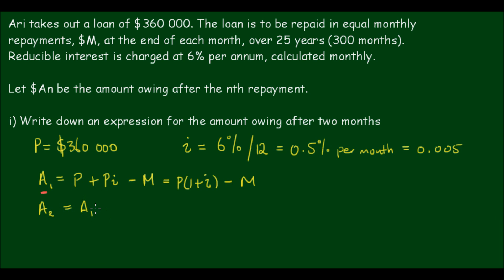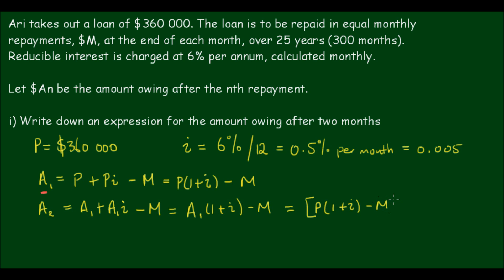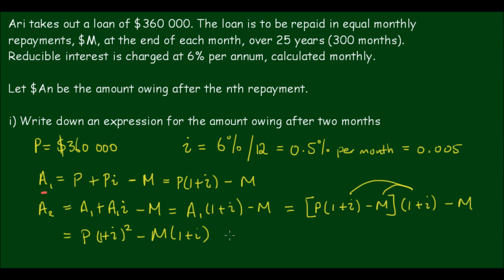The amount is going to increase by the interest rate, so A1 plus A1 times the interest, minus the monthly payment. So we'll have A1 times (1 + i) minus M. And if we now substitute the expression for A1 in, we'll get P times (1 + i) minus M, and that all has to be multiplied by (1 + i), minus M.